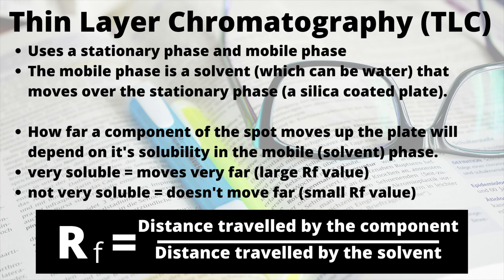Similarly, if one of the components is an alkane, alkanes are not very soluble in water and so that component spot wouldn't travel very far from the baseline at all. The RF value is calculated as the distance traveled by the component — measured from the middle of the spot — divided by the distance traveled by the solvent front. These RF values, if we know the solvent, can be compared to database values to try and identify the particular components of the mixture.